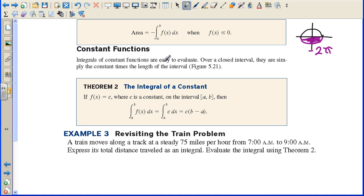Constant functions. Integrals of constant functions are easy to evaluate. Over a closed interval, they are simply the constant times the length of the interval. What this is saying is if you have the integral from, let's say, 1 to 3 of a constant, let's say 5 dx, that's 5 times the difference between these two numbers. So it's 5 times 3 minus 1, and this would be 5 times 2, which is 10.